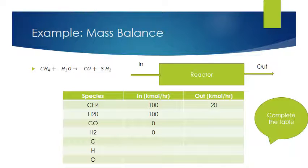Calculate the flow rate of CO, carbon, hydrogen, and oxygen in; carbon, hydrogen, and oxygen out; and the flow rate of water, CO, and hydrogen out. I suggest you try this calculation — pause the video now, and when you're ready, on the next slide we will go through the solution.